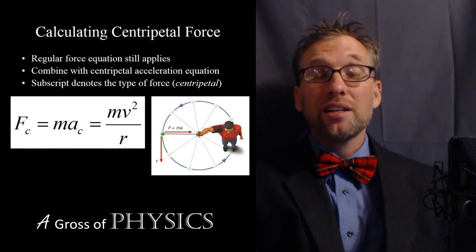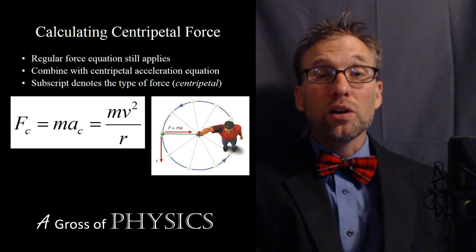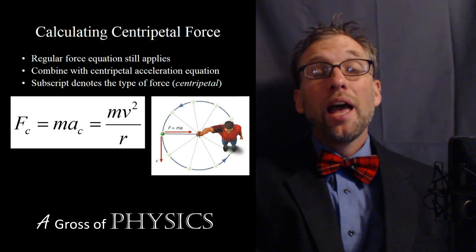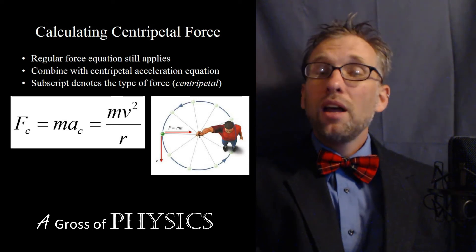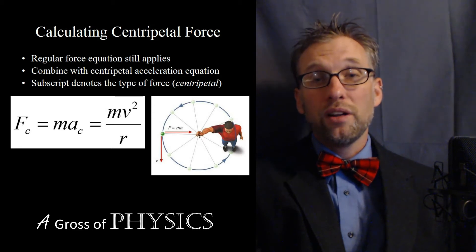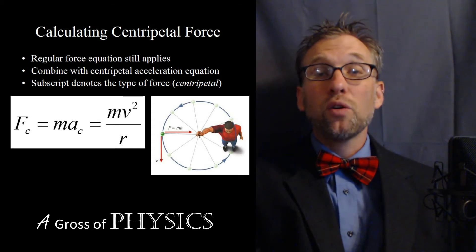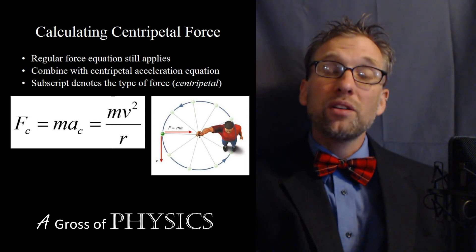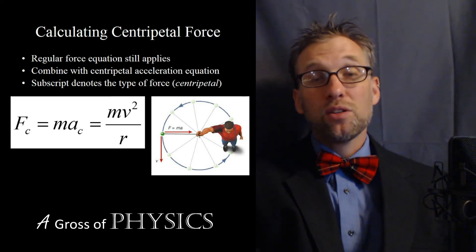If you're finding acceleration alone, use v²/r. If you're finding centripetal force, use mv²/r — mass in kilograms multiplied by speed squared over radius. Force is still measured in newtons because the m²/s² unit has one meter canceled by the radius, leaving kg·m/s², which is mass times acceleration. So: centripetal acceleration = v²/r; centripetal force = mv²/r.